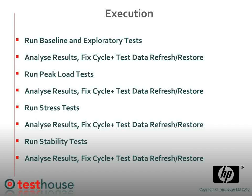Identifying the performance acceptance criteria is another very important area. This is an area that actually gets surprisingly overlooked because people seem to be more concerned about what the system can currently cope with rather than meeting the performance goals of the business. So identifying response times, throughput, and utilization goals and constraints is very, very important. And also it's important to get the detail here.